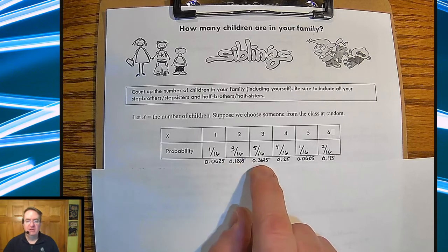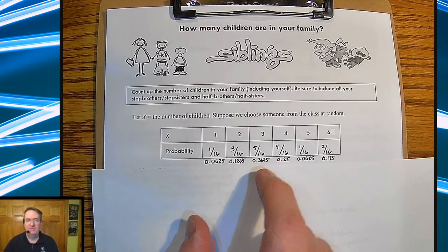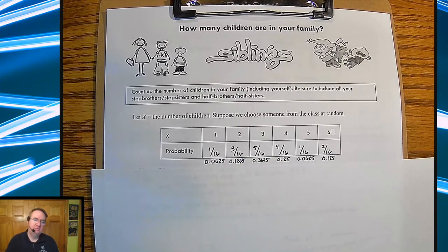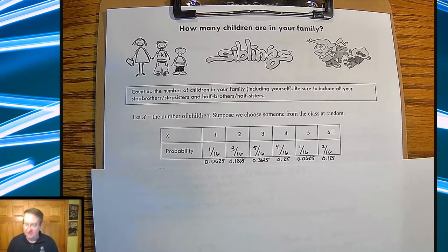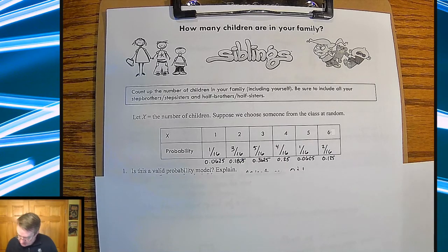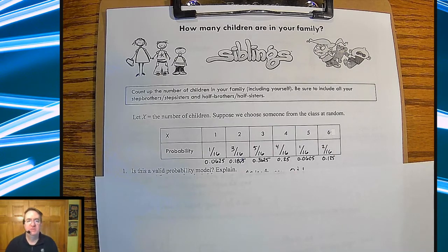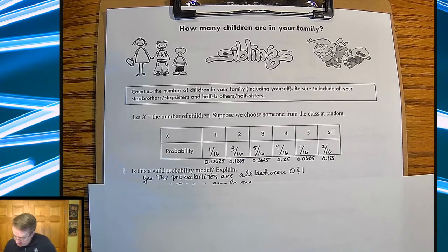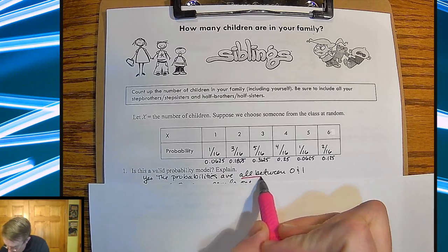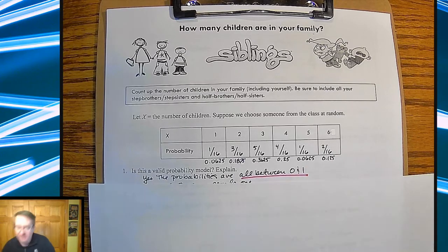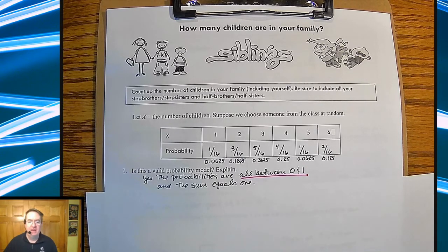Sometimes kids will ask if they can put decimals down here — it's fine. We'll come back to that later, but it's not necessarily needed at this point. So the first question is: is this a valid probability model, and explain why? There are two components for it to be a valid probability model. The first one is all the probabilities are between zero and one, and the second one is that they all add up to be one.